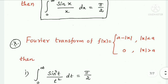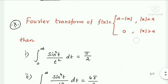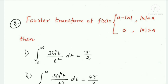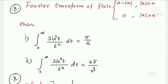Next: Fourier transform of f(x) = a − |x| where |x| < a and 0 where |x| > a gives two results. First: integral from 0 to ∞ of sin²(t)/t² dt equals π/2. Second result: integral from 0 to ∞ of sin⁴(t)/t⁴ dt equals 4π/3.